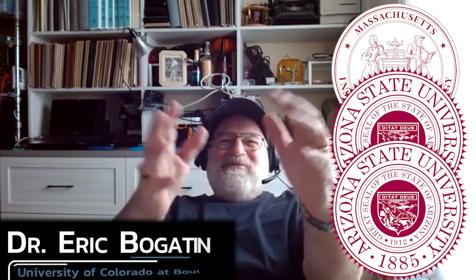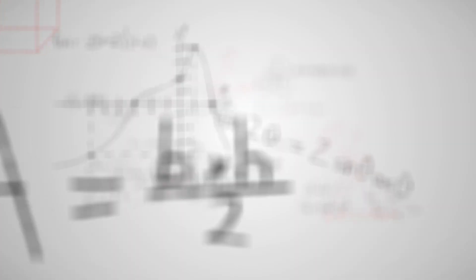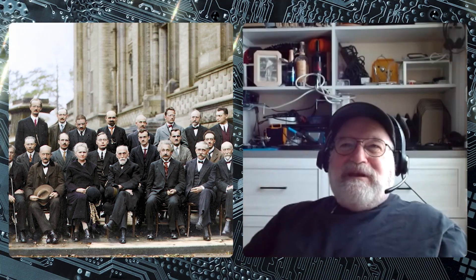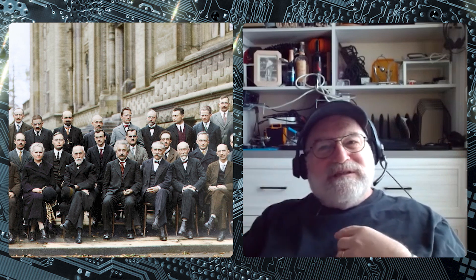OK, so let's talk about what is an electron. When I use the word "I," that means I don't understand it. When I use the word "we," that means my impression is the consensus in the scientific community doesn't understand it.